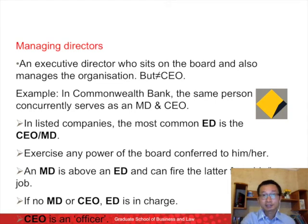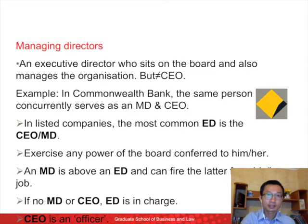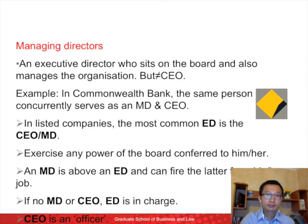A managing director is an executive director who sits on the board and also manages the company. In listed companies, the most common executive director is the CEO or managing director. In some organizations, the two positions are held by the same person — in the Commonwealth Bank, for example, the same person concurrently serves in the two positions. A managing director is different from a CEO. The two terms are often used interchangeably, but actually they are different. The CEO is the operational head — he or she is the board employee. A managing director fulfills the CEO's role but is also a board member.